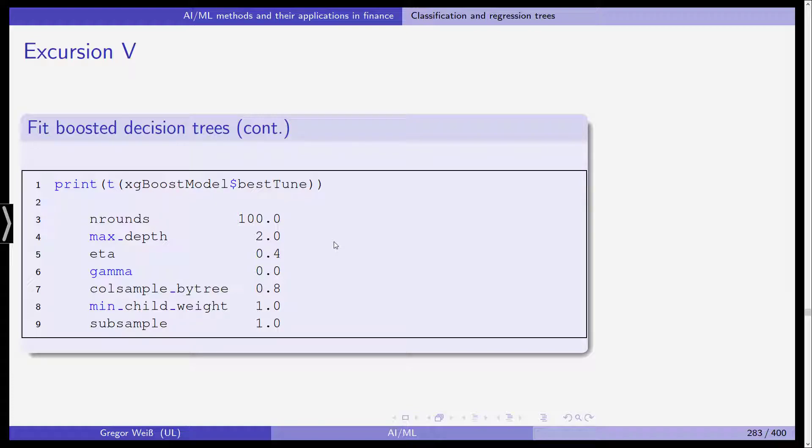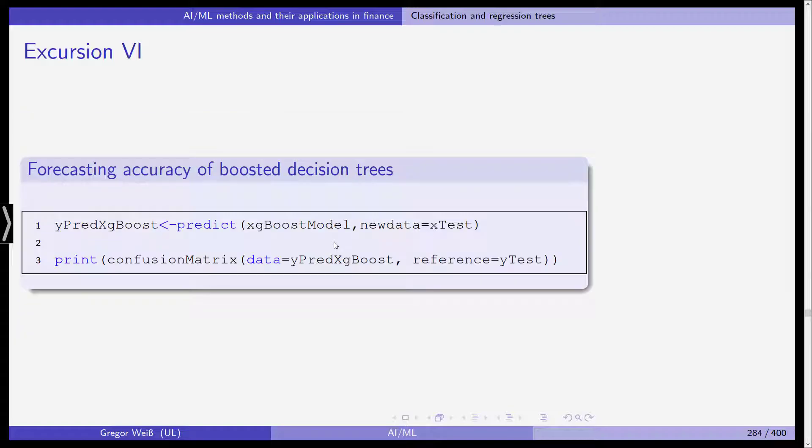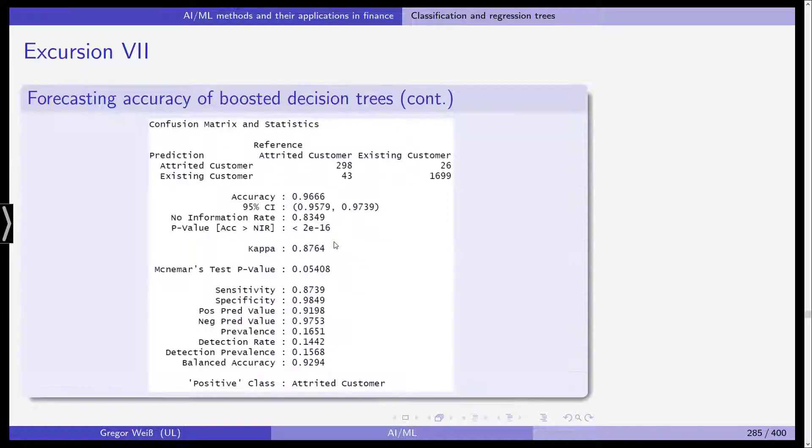So this is what we get out. 100 rounds, maximal depth is two and some additional parameters and let's already consider the forecasting accuracy. So we predict based on XGBoost model, the new data is X-test, the reference is Y-test and we look at the error matrix and now we see that actually where we previously had, I think 170, we have an improvement.